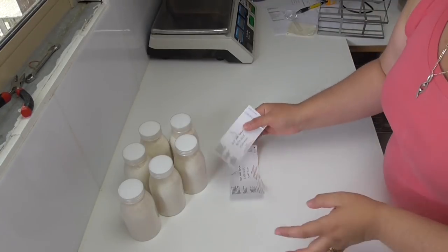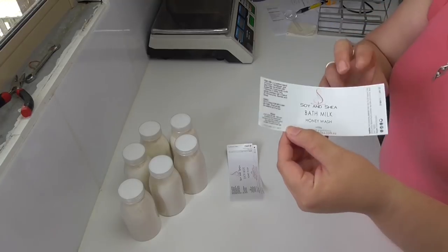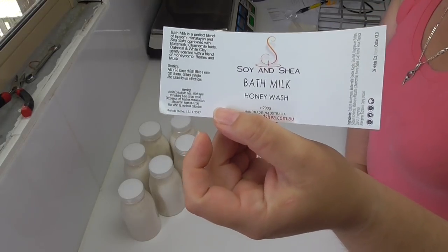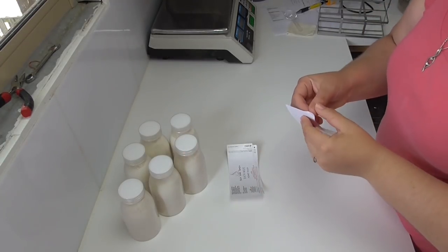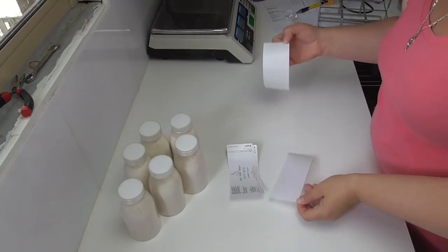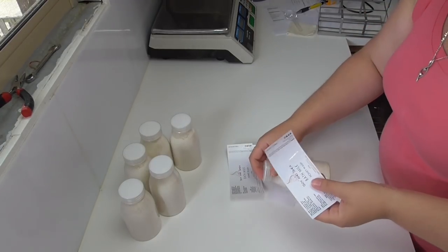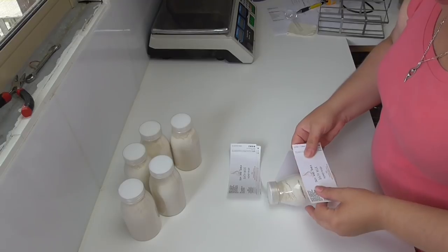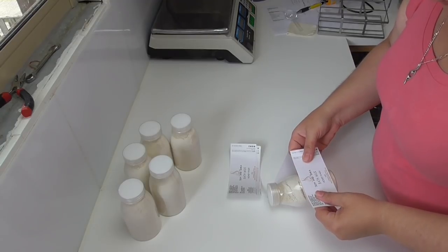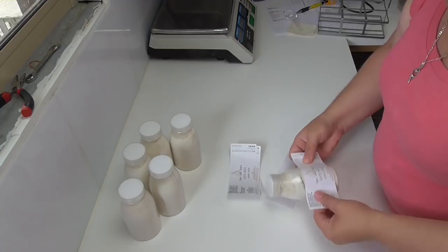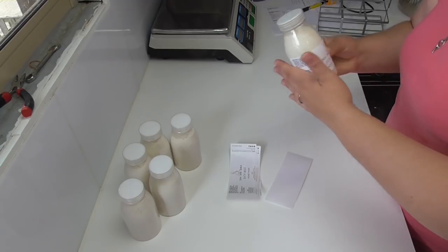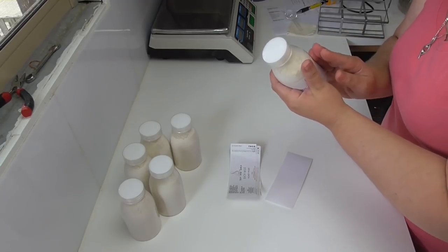All right, so we're now up to labeling these bottles. I have all my labels here which I designed myself in Corel Draw, and then I printed them up using my laser HP printer. I'm just going to pop the labels on the front here. Now when you are doing your labeling, be sure to check your own country's rules and regulations.